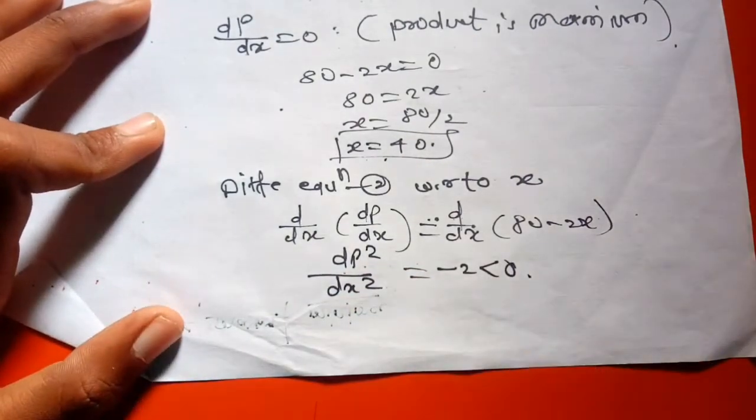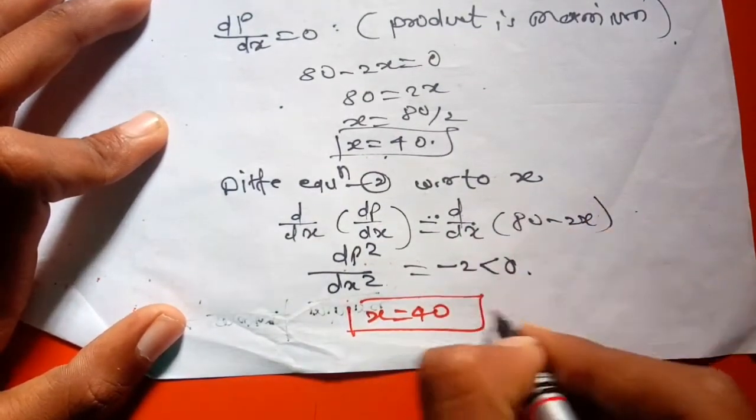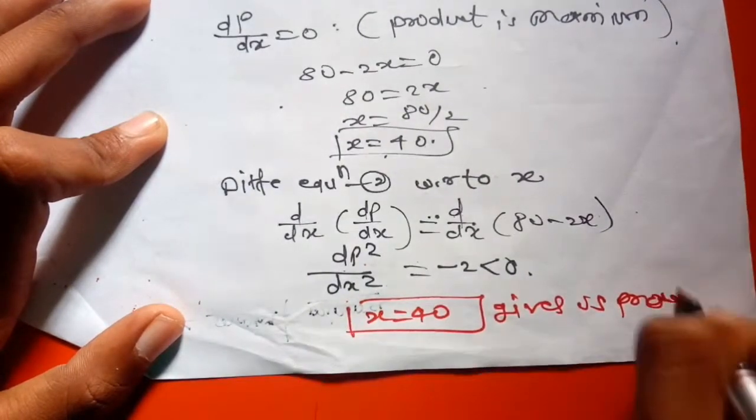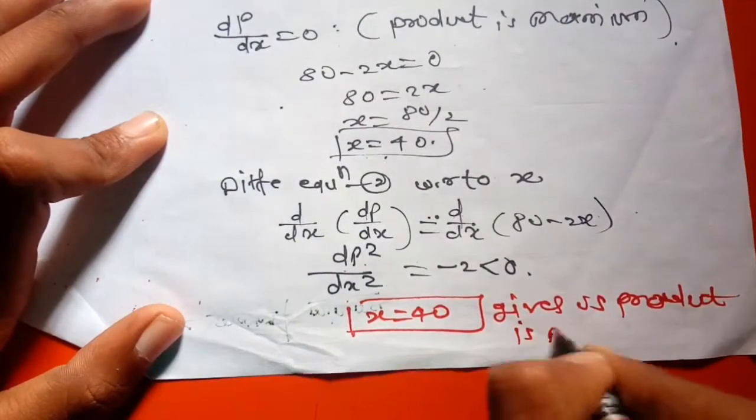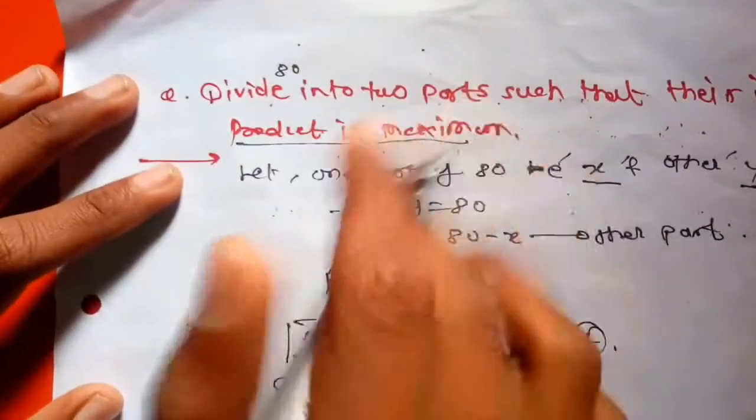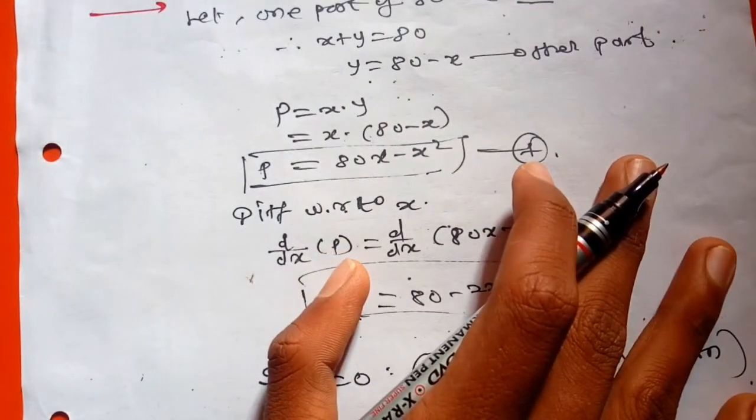So X equals 40 gives us product is maximum. The question asked to divide 80 into two parts, so the two parts are 40 and 40.